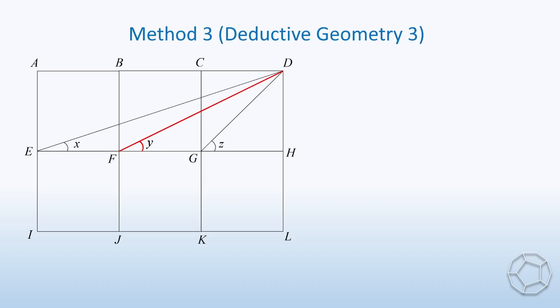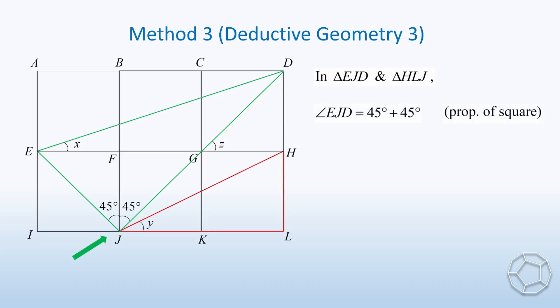Now, we move the angle y downwards to the point J. Construct the two green sides EJ and DJ as well. Let's look at the green triangle EJD and the red triangle HLJ. Guess what? We're going to use the same method, that is proving similar triangles for the same reason in a different setting. Here, we can show that this angle at the point J is a right angle. Because it is the sum of two angles, both of them are 45 degrees. This is properties of square. So the sum is 90 degrees. It is also the same as this angle at the point L.